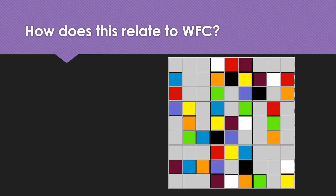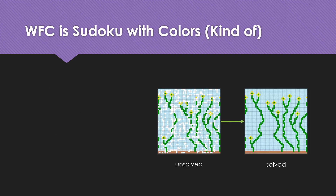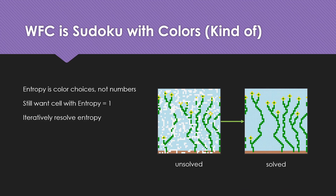How does this relate to wave function collapse? Well, if we consider Sudoku but with colors, the color board of Sudoku is basically how wave function collapse functions — the entropy is a color choice rather than a number. We still want each cell to have an entropy of 1 and we wish to iteratively resolve the entropy for the entire image.